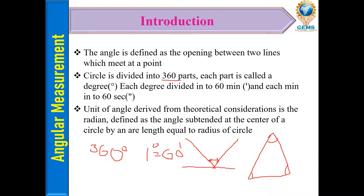Each minute is divided into 60 seconds. The unit of angle derived from theoretical considerations is the radian. A radian is defined as the angle subtended at the center of a circle by an arc length equal to the radius of the circle. So if we have a circle, the angle measured in radians corresponds to when the arc length equals the radius.